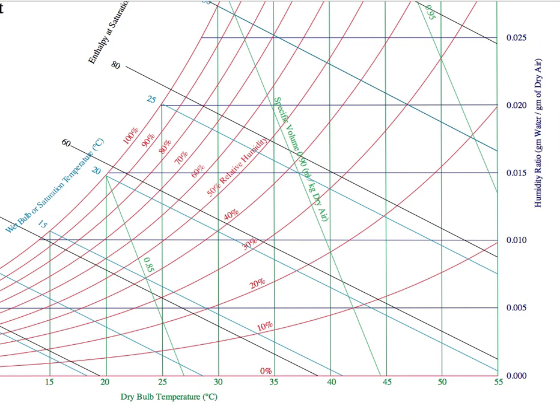Let's look at one very simple example to see the basic things that we can do using a psychrometric chart. Say we have a moist air system that's at 25 degrees Celsius dry bulb temperature and with a humidity ratio of 0.01. We have this moist air system: the dry bulb temperature is 25 degrees Celsius and the humidity ratio is 0.01.